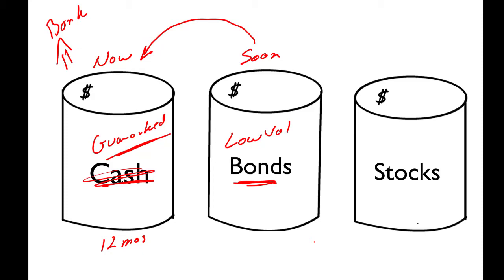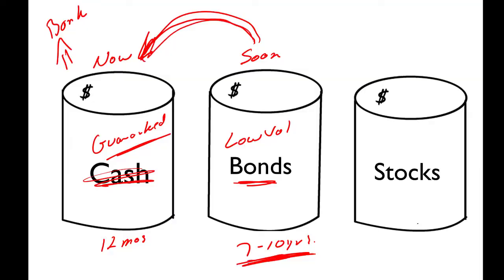The soon bucket allows you to refill the now bucket and protects you from the stock market. But if you're using the soon bucket to refill the now bucket every year, how much do you need in there? We like to have seven to ten years' worth. The reason is that gives you enough time for the stock market to run through its cycles. Looking at the two longest cycles in the last 70 years, it took a little less than six years for the stock market to go from all-time high to crash, recover, and reach new highs in a new bull market. So seven to ten years gives you pretty good protection.